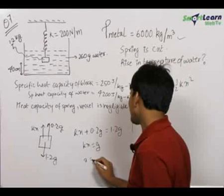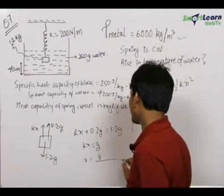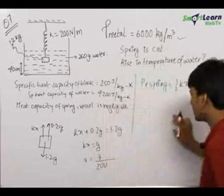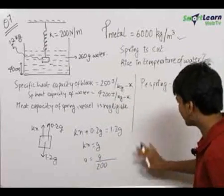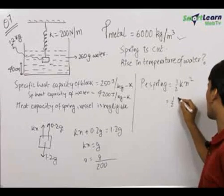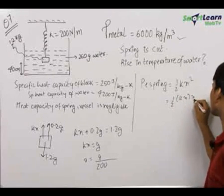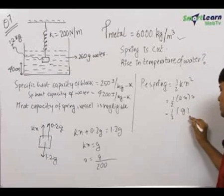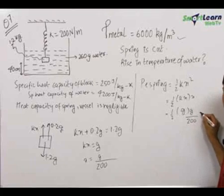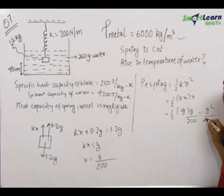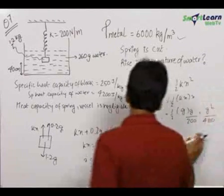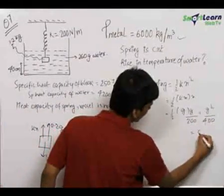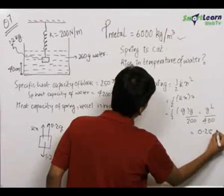From kx = g, we get x = g/k = g/200. Substituting into the spring PE formula: PE_spring = ½kx² = ½ × k × x × x = ½ × g × (g/200) = g²/400. Taking g = 10 m/s², this gives 0.25 joules. This is the potential energy stored in the spring, which is lost when the spring is cut and returns to its natural length.